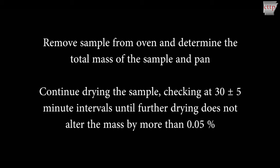If the mass has changed by more than 0.05 percent, return the container to the oven and dry for an additional 30 plus or minus 5 minutes, then check the mass of the sample. Continue drying and checking at 30 minute intervals until further drying does not alter the mass by more than 0.05 percent.